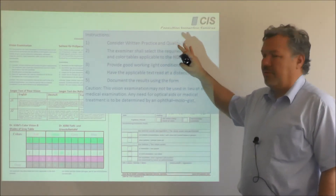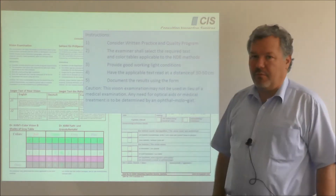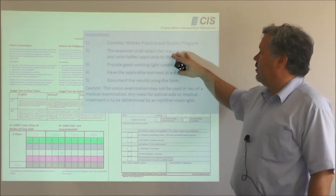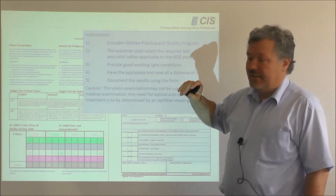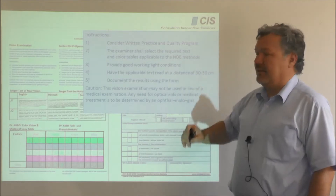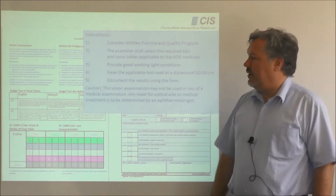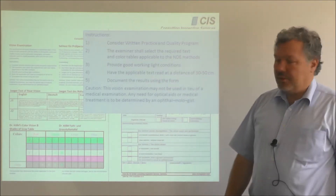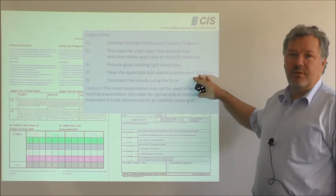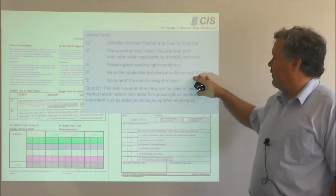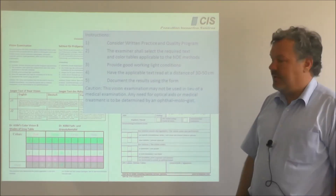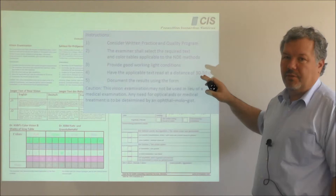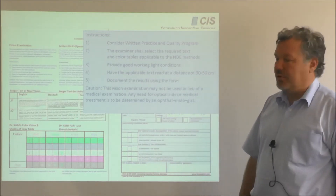First of all, make sure you consider the written practice and the quality programme requirements. Then the examiner who conducts the vision exam should select the required text size and also the required colours applicable to the methods which are to be used in the qualification of the personnel. Make sure you have adequate working light conditions and watch the distance — 30 to 50 centimetres, or for American users, one foot to one foot and a half.